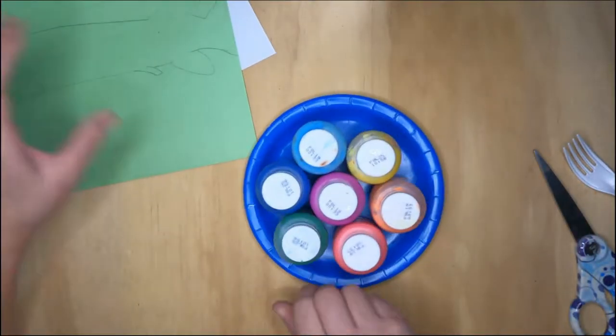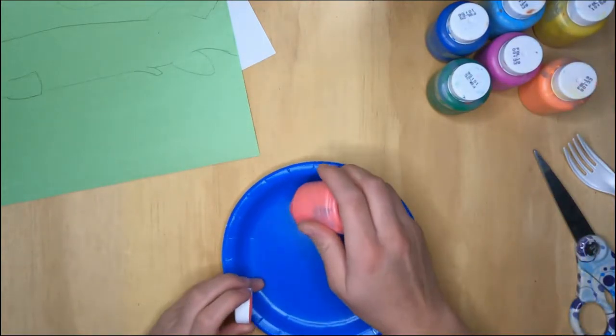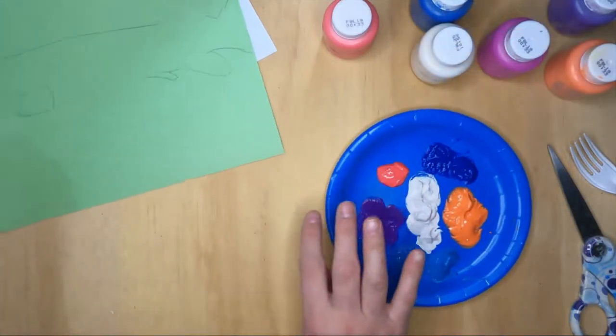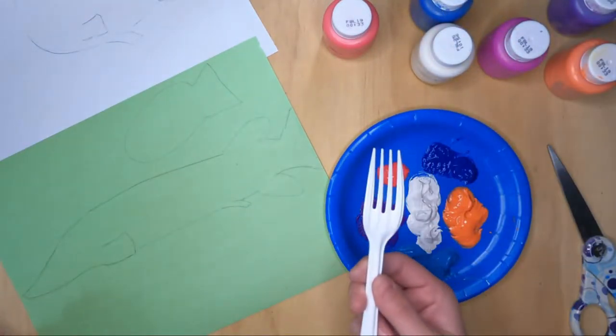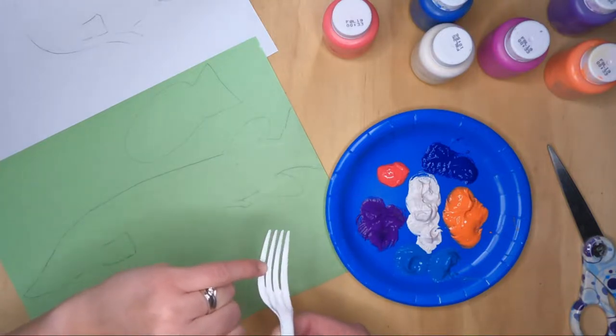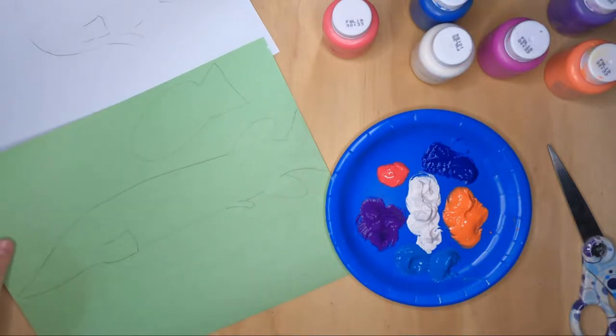All right, next we're just going to pull over our tray of paint. We got our colors here and what we're going to do is we're going to take our fork. I like a plastic fork. They tend to have bigger ridges on them back here to help hold on to more paint. You can use a kitchen fork absolutely, but I like the plastic ones because they got a nice big ridge on them.